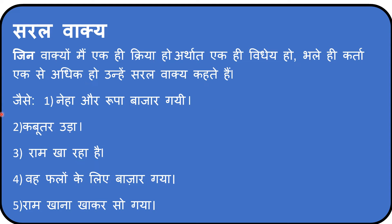Saril vaakya — simple sentences. Those sentences in which there is only one vidhev are known as saril vaakya. Maybe the subjects might be more than one, but there is only one kriya. For example: Kabutar uda — one vidhev. Ram kha raha hai — he is eating. Vah phalon ke liye bazaar gaya — he went to the market for fruits. Ram khana kha kar so gaya — he had food and slept off. These are all saril vaakya.